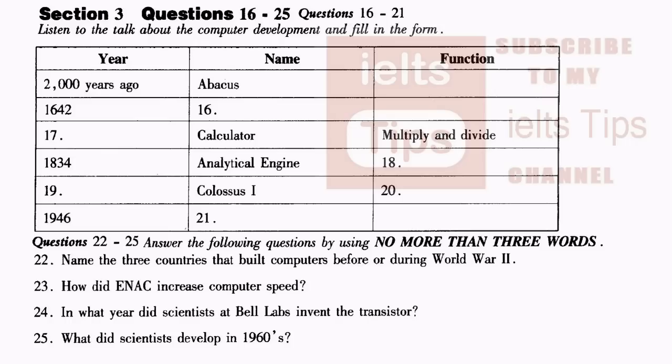29 years later, Gottfried von Leibniz developed a calculator that could both multiply and divide, the world's first working computer. The analytical engine was designed by Charles Babbage in 1834. Babbage believed that his machine could be taught to do mathematical tasks.